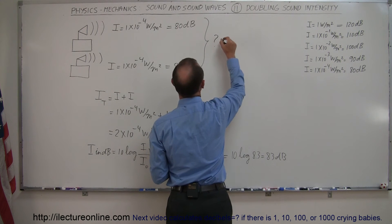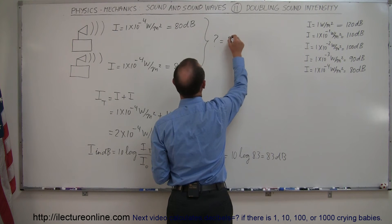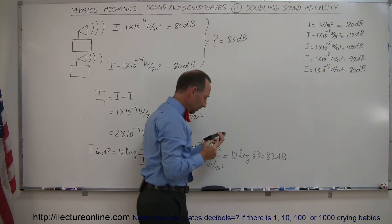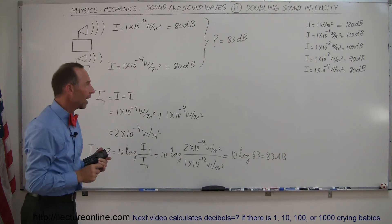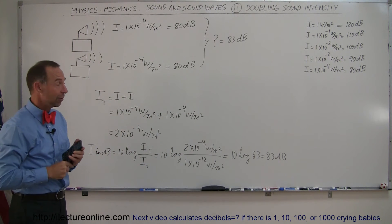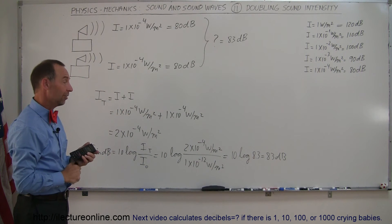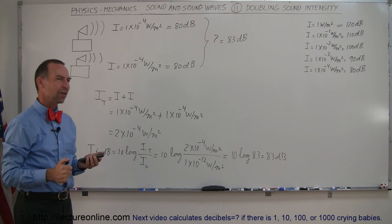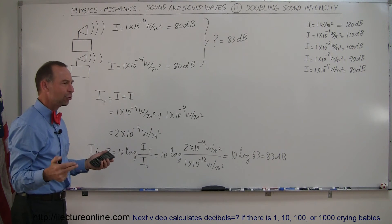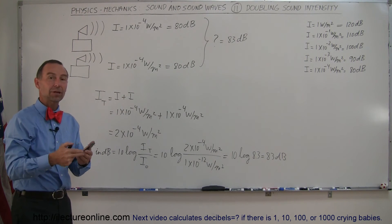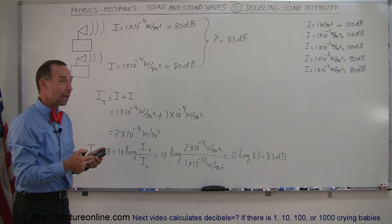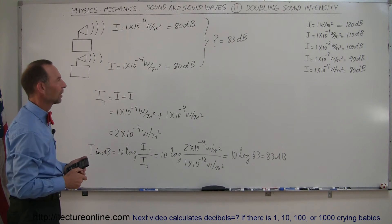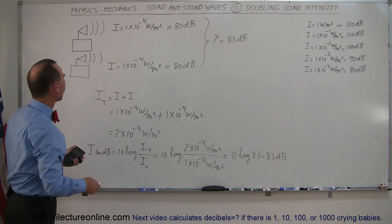So this equals 83 decibels. What that shows is when we double the sound intensity, you add 3 decibels. So if something puts out 90 decibels, and you now have two of those objects putting out 90 decibels, the two together put out 93 decibels. Yes, that's what it means.